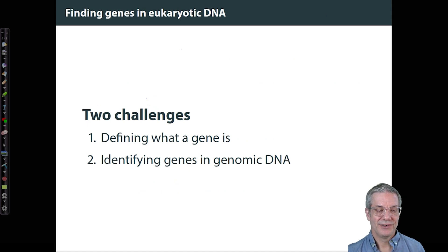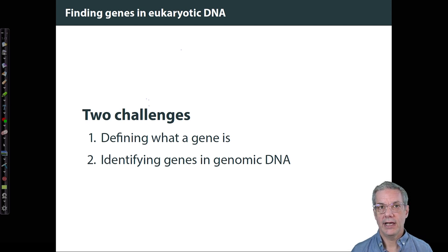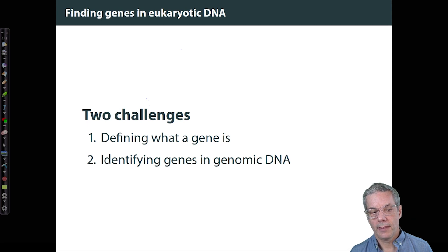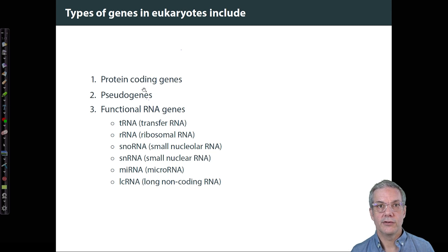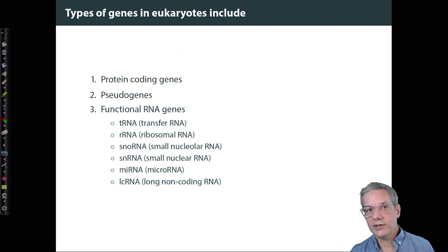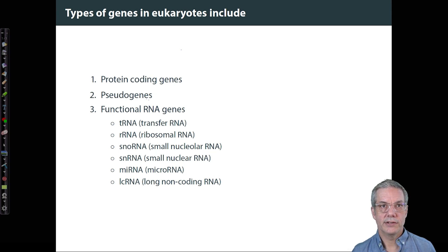A key question is: what is a gene? When we consider the question of a gene, how do we define what a gene is on the genome? In eukaryotes, there are many types. There are protein-coding genes, which are usually the genes we first learn about, and there are pseudogenes — molecular fossils that resemble genes from which they were derived but are not functional. Then there are functional RNA genes like transfer RNAs, ribosomal RNAs, small nucleolar and small nuclear RNAs, microRNAs, and long non-coding RNAs. All of these different classes of functional RNA don't require a protein sequence, but they're still all genes.